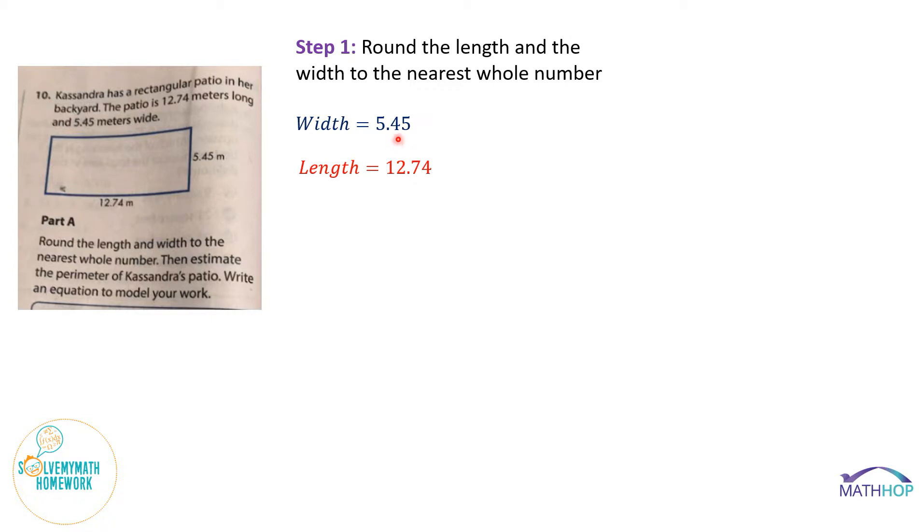If this value, this 0.4, if that four is five or greater, we round up to the next whole number. If it is not, so if it is four or less, we will round down to five. Think of this, 45 hundredths. Halfway or more, we round up. If it's not at least halfway to the next number, we are rounding down. So four is definitely less than five. We are going to round 5.45 down to five. That will be the whole number it rounds to.